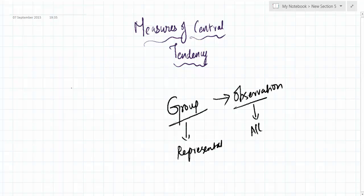We need a representative of the group which should actually represent each and every observation or the majority of the observations of the group. That means we must have a representative that should be central for the value of all the observations. And this central value will be called as a measure of central tendency.